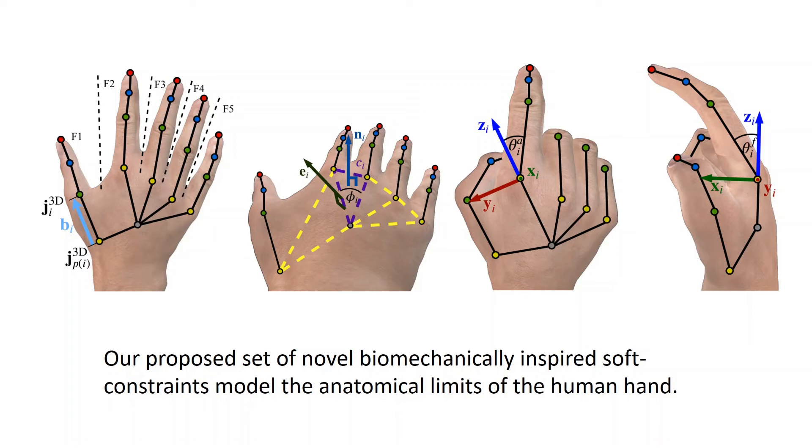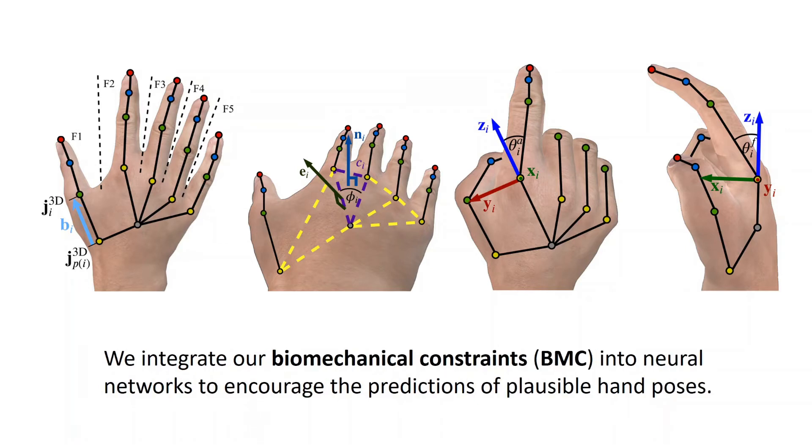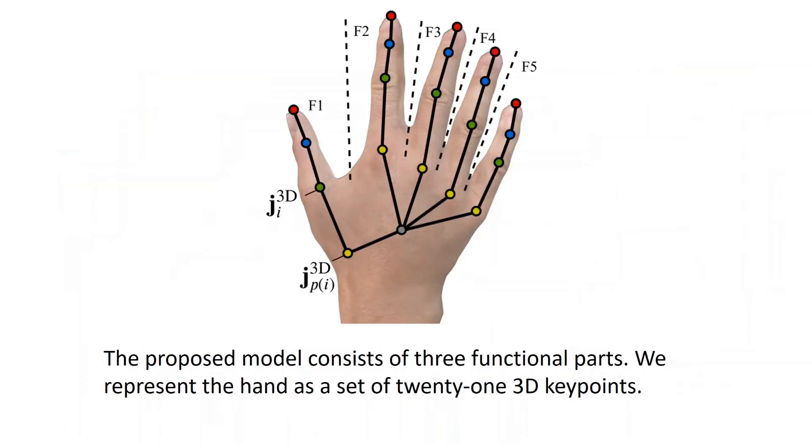Our proposed set of novel biomechanically inspired soft constraints model the anatomical limits of the human hand. We integrate our biomechanical constraints, or BMC for short, into neural networks to encourage the predictions of plausible hand poses. The proposed model consists of three functional parts. We represent the hand as a set of 21 3D keypoints.